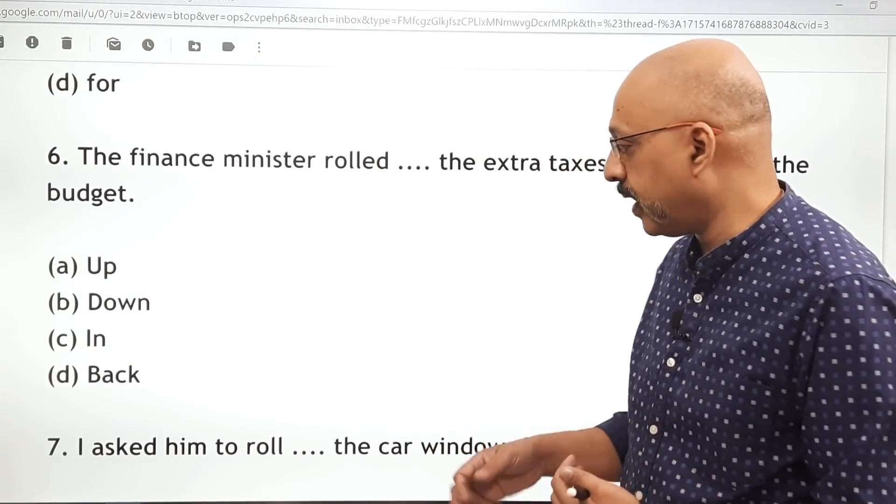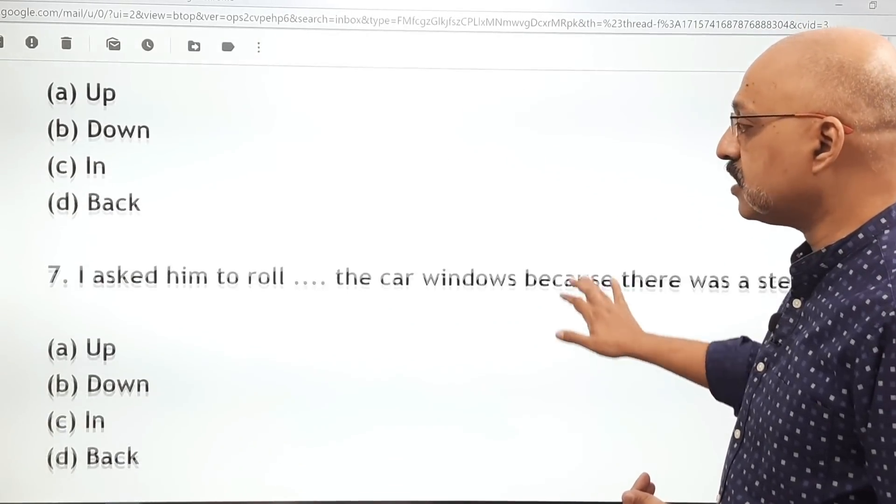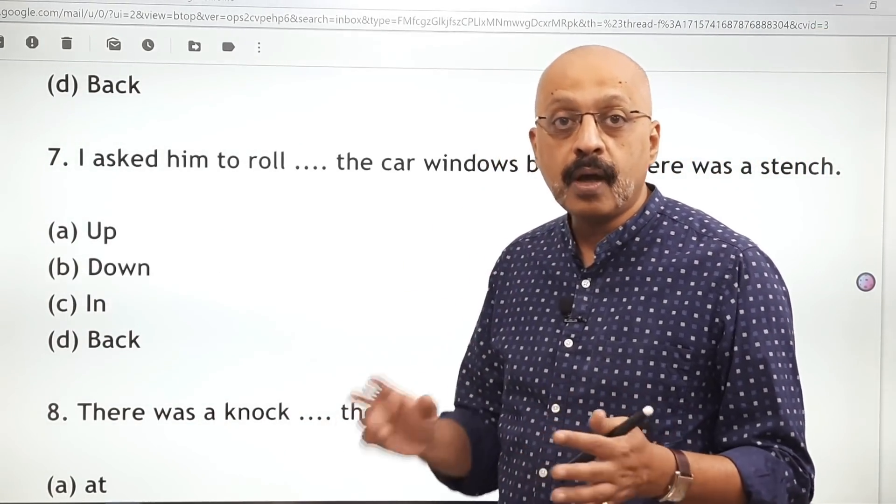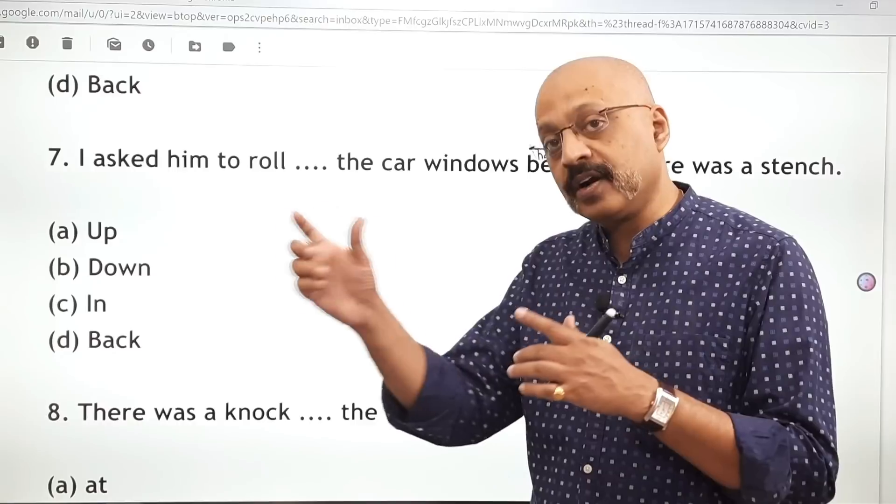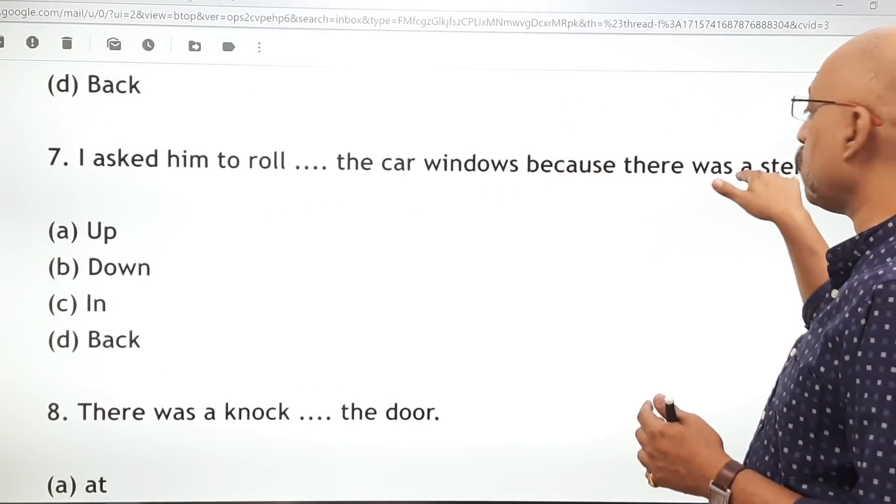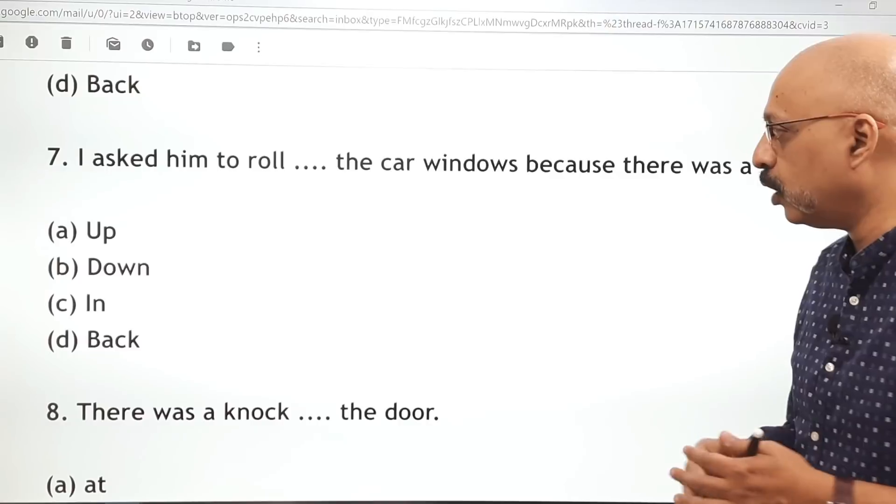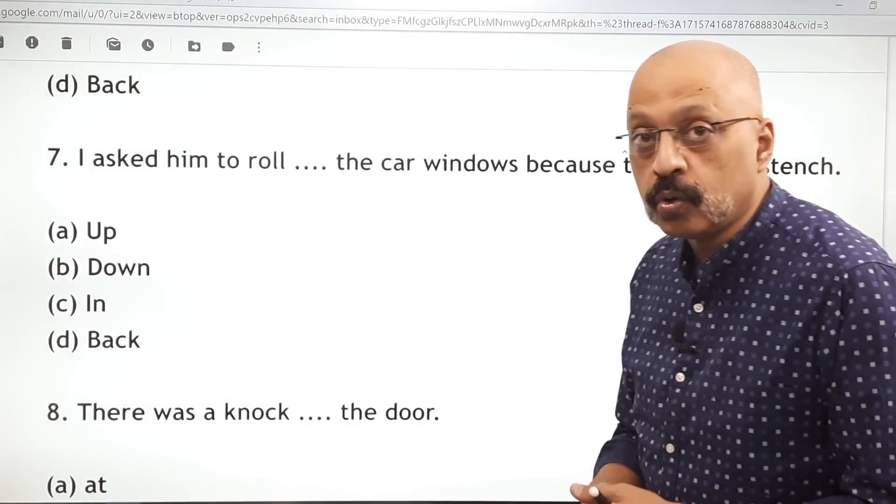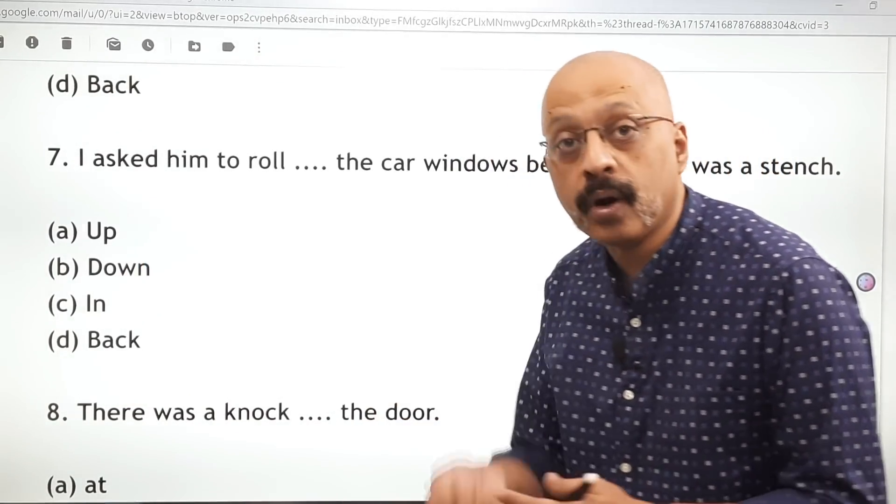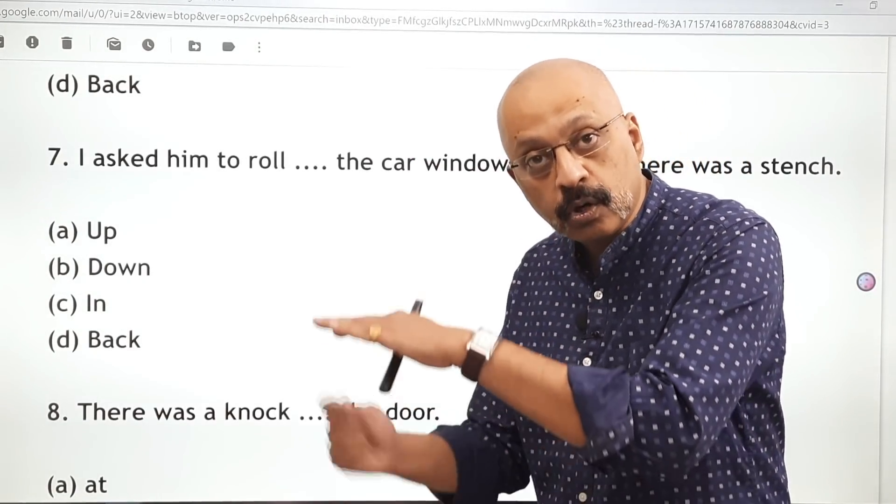I asked him to roll... Now, all this is, if you understand phrasal verbs, you will be able to make a distinction between where what is used. I asked him to roll the car windows because there was a stench. Now what is a stench? Bad smell, an odor. So what do you do when there is a stench? You roll up the windows. Roll up the windows, not roll down the windows. Roll down means you bring it down, roll up means you bring it up.